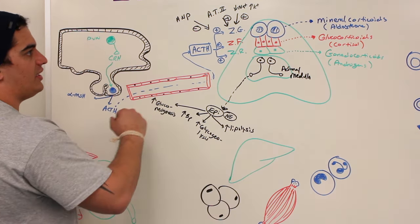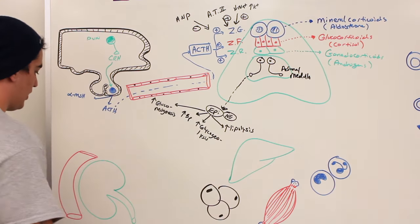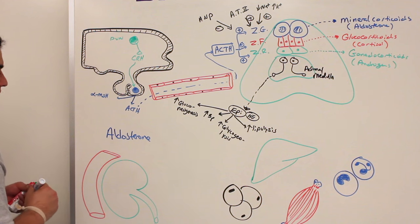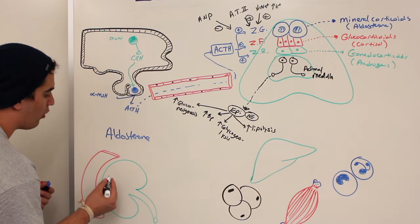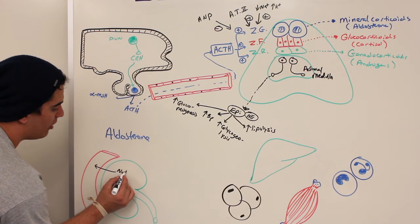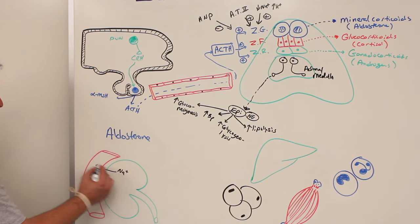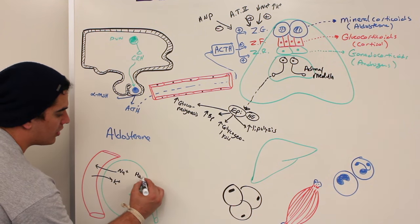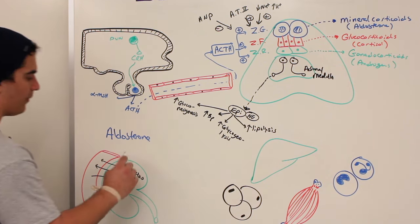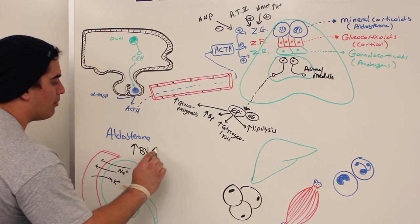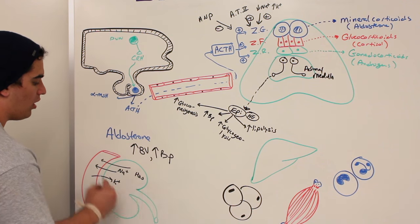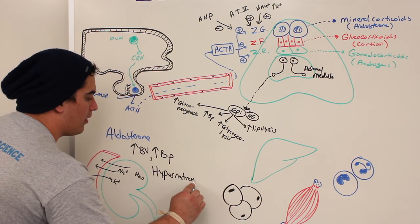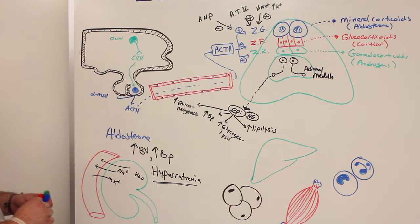Looking at the effects of mineralocorticoids — specifically aldosterone — it acts on the kidneys, particularly in the distal convoluted tubule. It promotes sodium reabsorption from the kidney tubules into the blood and excretes potassium. Water follows the sodium, resulting in increased blood volume, increased blood pressure, and increased sodium content — what's called hypernatremia, though not necessarily pathological.